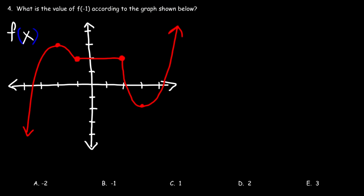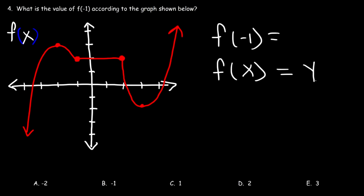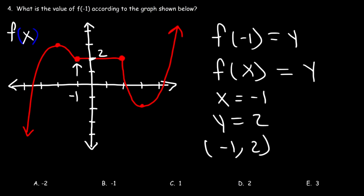Number 4. What is the value of f(−1) according to the graph shown below? When dealing with functions, x is the number inside the function and the entire function equals y. So we're looking for the value of y when x = −1. At x = −1 on the curve, y is equal to 2, giving us the point (−1, 2). So f(−1) = 2, which means D is the right answer choice.